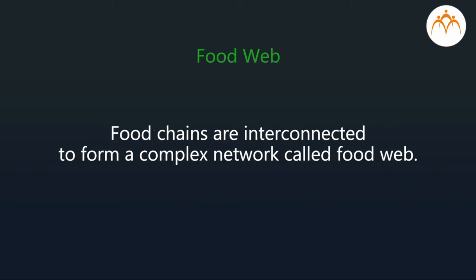Food web: Actually, food chains do not operate in isolation but are interconnected to form a network called food web. There are more than one food chains operating in the pond, and these food chains show interactions with each other to form a complex food web.